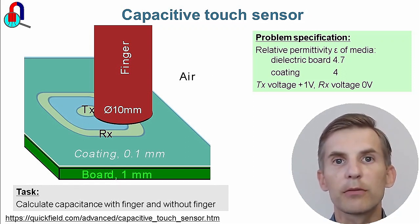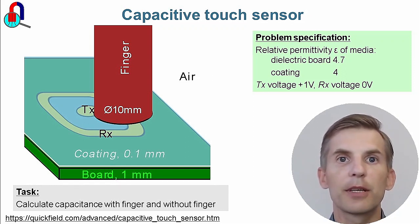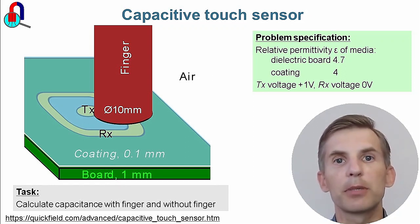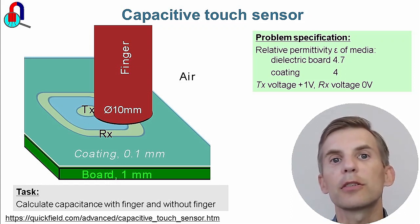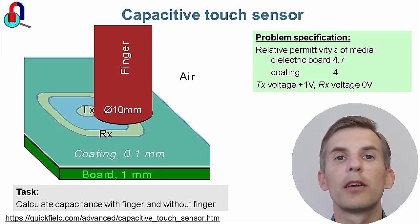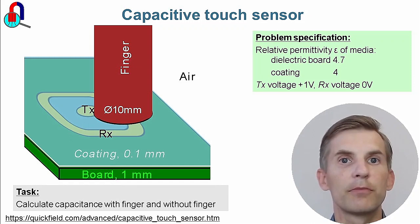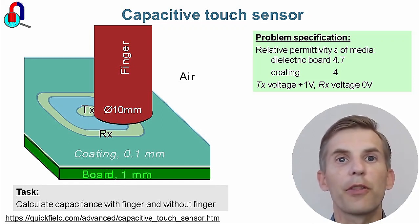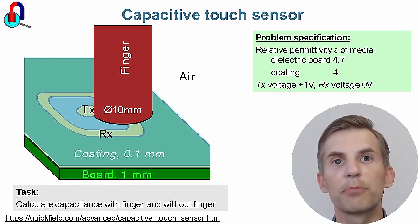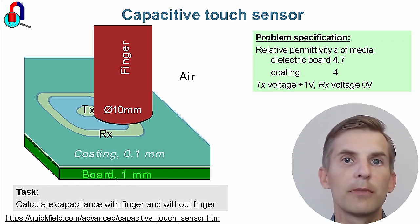For simplicity, we will approximate the finger shape as a cylinder, but it is not necessary that the finger is placed on the axis of symmetry of the sensor. So a three-dimensional problem will be simulated with the finger placed in some arbitrary position.